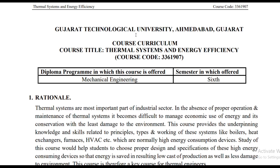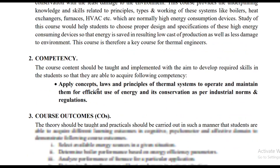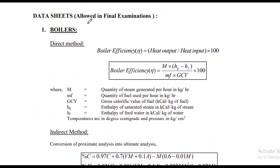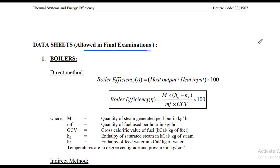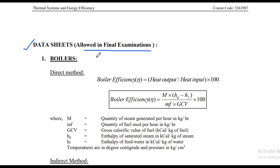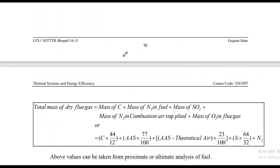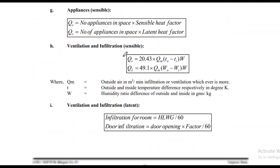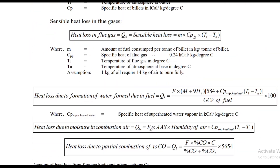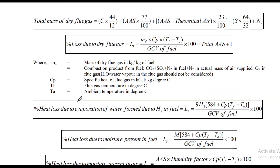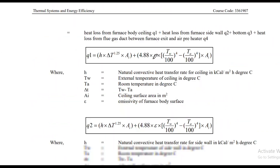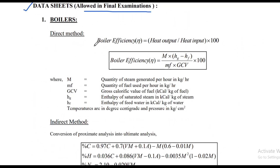You can open the syllabus here. In this syllabus, you will find a data sheet. This is called 'Allowed in Final Examination.' You will find the syllabus and print card with all the equations. Go to page number 16. Print it for your exam — you are allowed to bring this in the final exam.